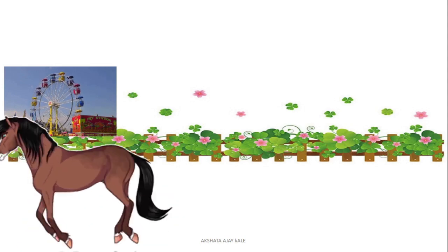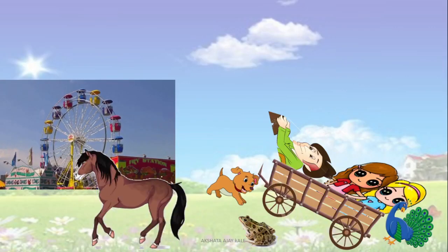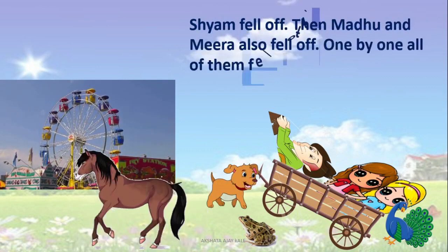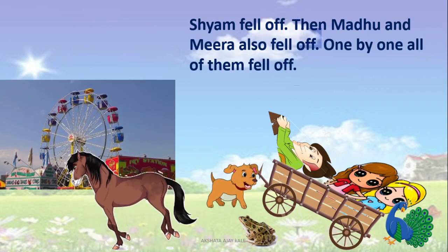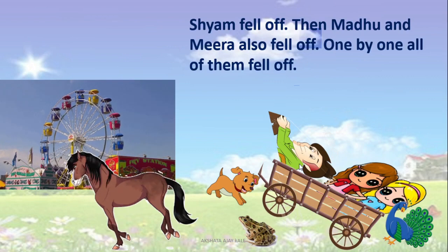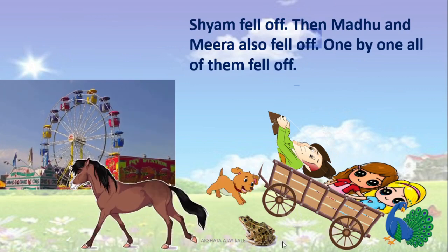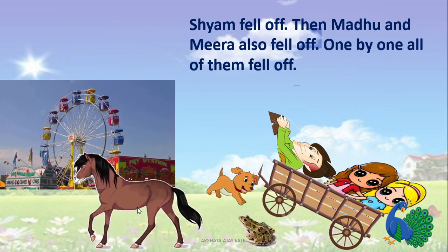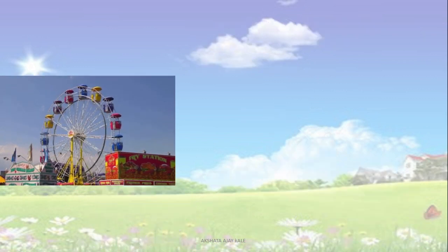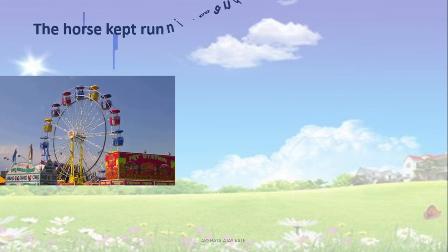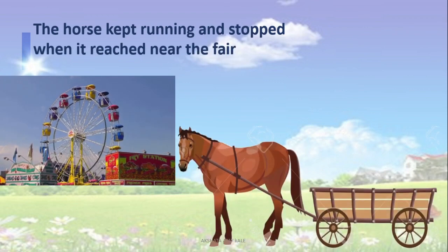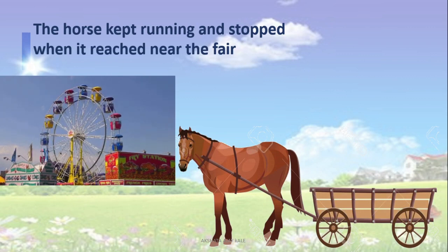Shams fell off. Then Madhu and Meera also fell off. One by one, all of them fell off — Madhu, Meera and Shams all fell off. The peacock came down, the frog is down, the dog is also there, and the horse is running here and there. Afterwards, the horse kept running and stopped when it reached near the fair. It calmed down and stopped near the fair.